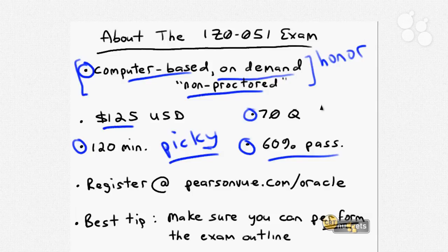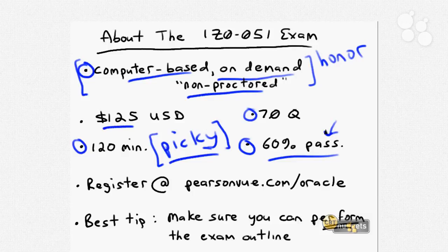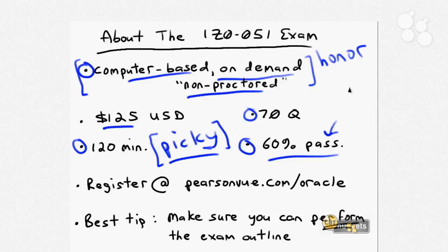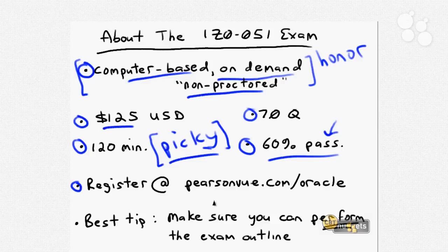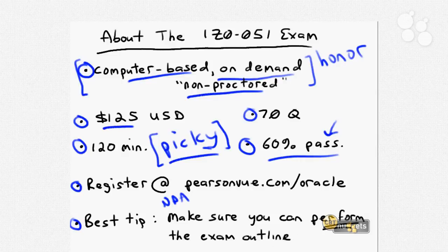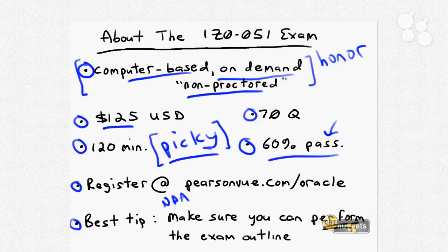Either you know SQL or you don't. Now, this pickiness is counterbalanced by the fact that the pass mark is among the lowest for any IT certification test I've ever taken. So I think Oracle will cut you some slack, and you have a pretty good chance of passing on your first try. The exam is priced about right at $125 per attempt USD. You register for the exam at pearsonvue.com/oracle. I'll show you that in just a minute. The best tip I can give you is to make sure before you schedule your test, you can perform the exam outline. Make sure every one of those skills listed...